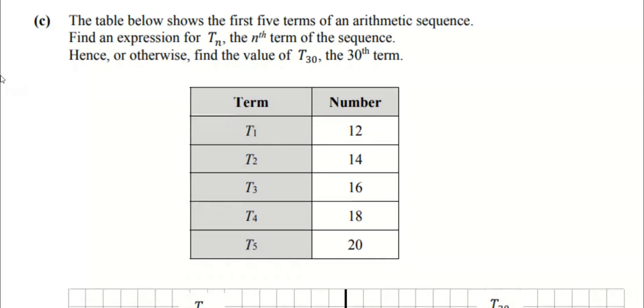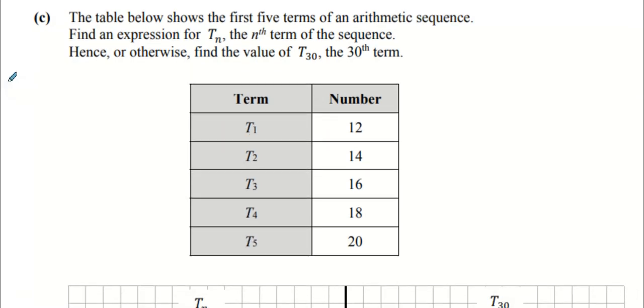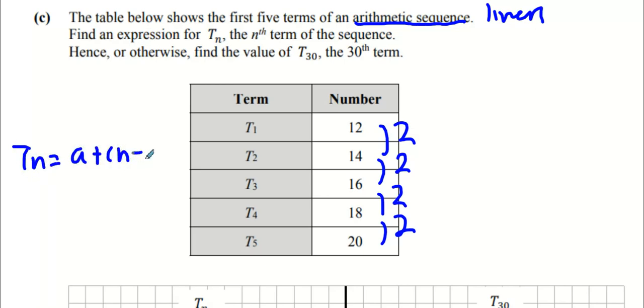The table below shows the first five terms of an arithmetic sequence. The minute you see arithmetic sequence, or linear sequence, or you notice that the difference is always the same, what formula do you pull out? TN equals A plus N minus 1 times D. It's in your tables.